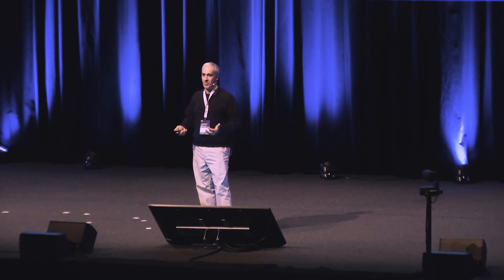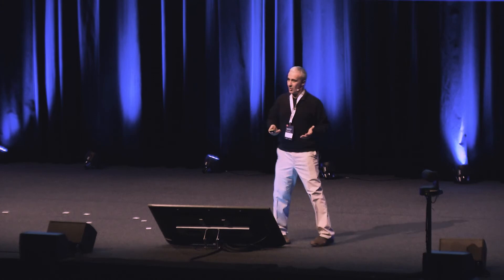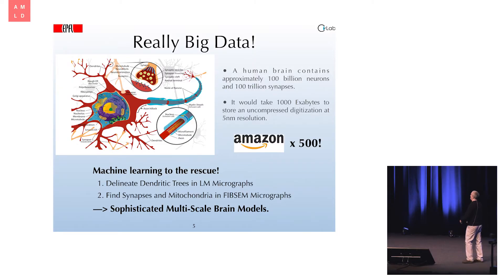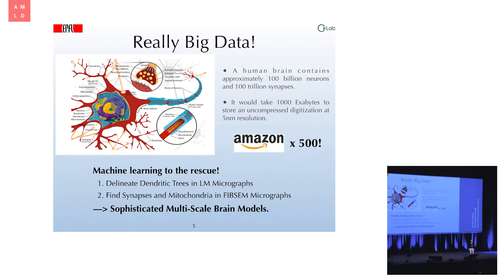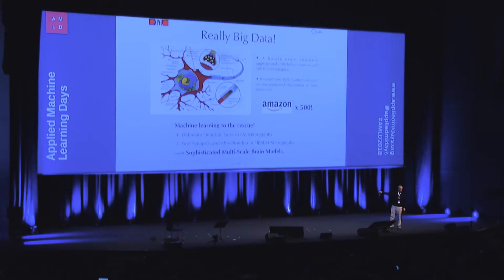Having an army of PhD students draw on these images by hand is not a solution — it just doesn't scale up. That's where machine learning and more generally computer vision is going to be needed. I'd like to show in the remainder of the talk how to do this for two specific problems: how do you delineate and follow these wires, untangle this spaghetti soup to see what's connected to what; and how do you model the intracellular structures — the synapses and the mitochondria — to quantify their shape.